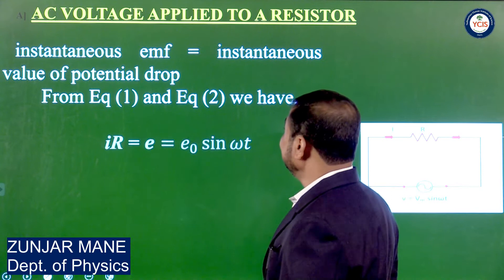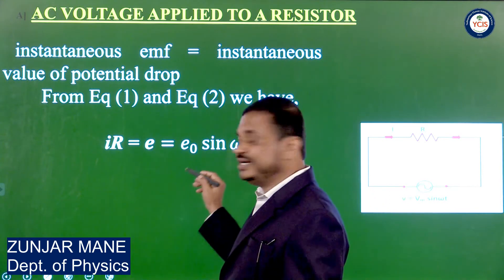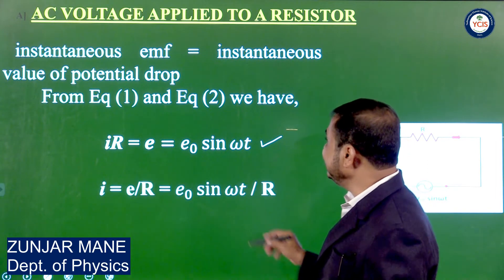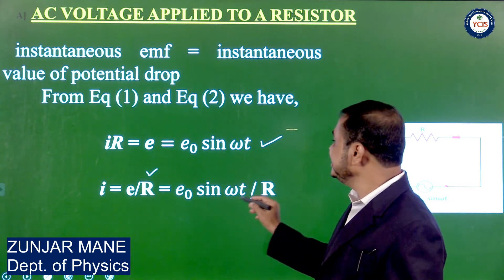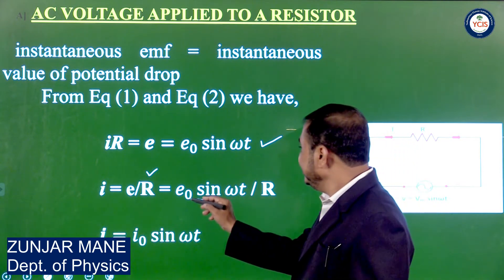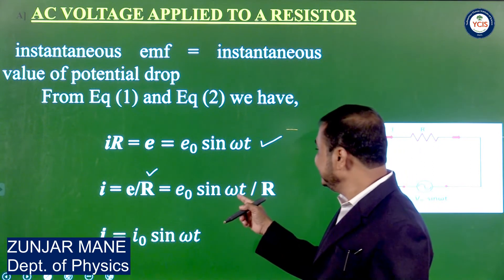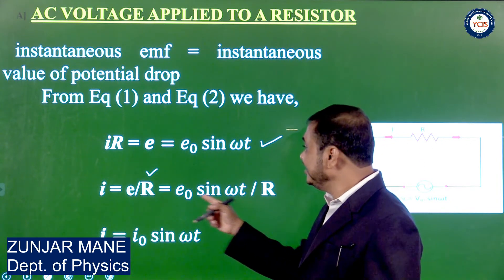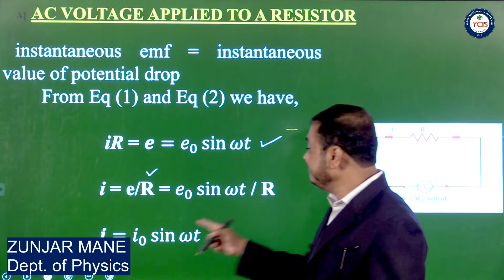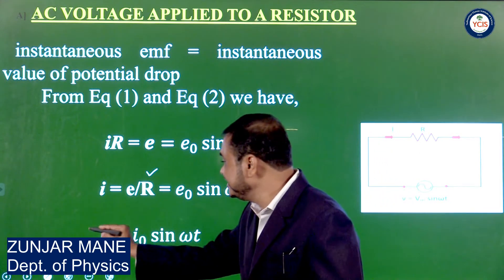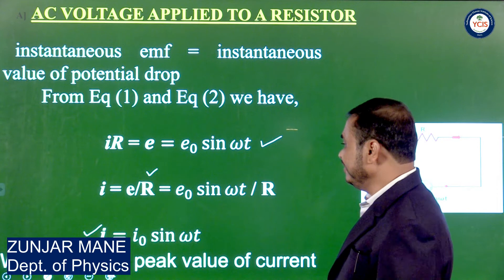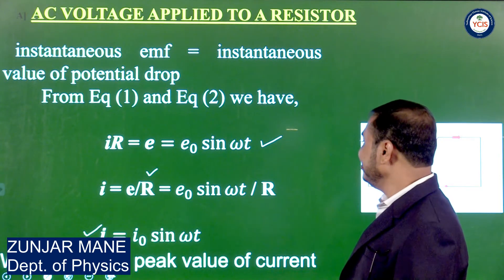From equations 1 and 2, we have I × R = E, and since E = E0 sin omega T, therefore I = E/R = (E0/R) sin omega T. When sin omega T has its maximum value of 1, we have I = I_max = E0/R. This maximum current is represented by I0, the peak value of current. So the current equation is I = I0 sin omega T, where I0 = E0/R.